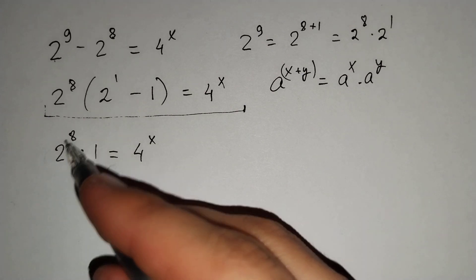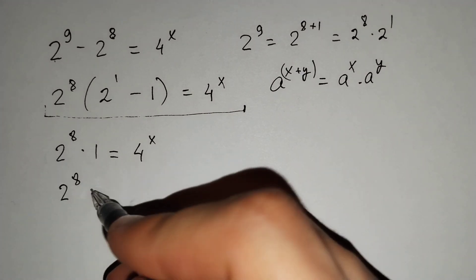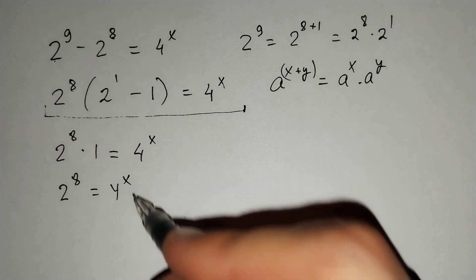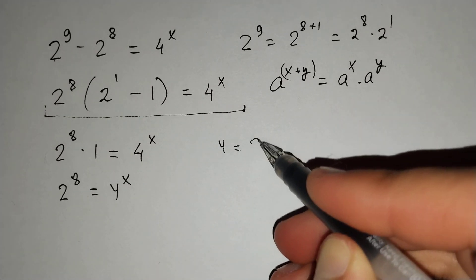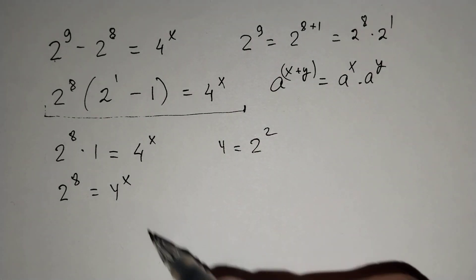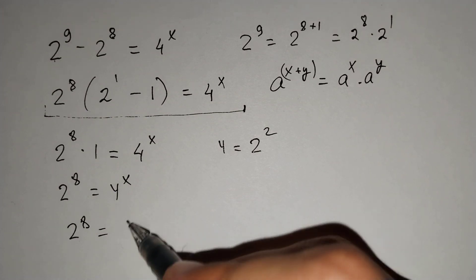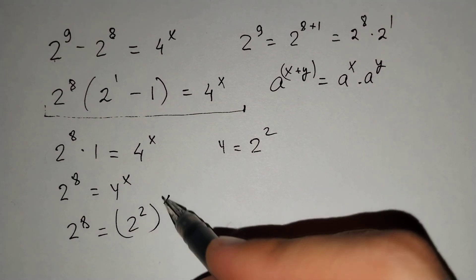2 power 8 equals 4 power x. And we know that 4 equals 2 power 2. And let's put it here. 2 power 8 equals 2 power 2 power x.